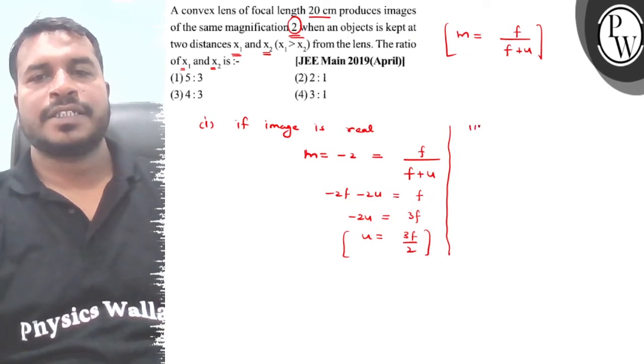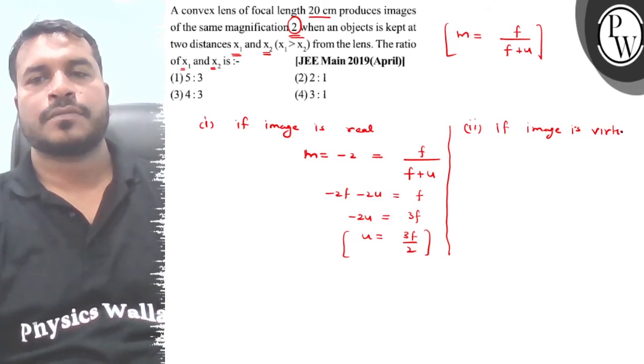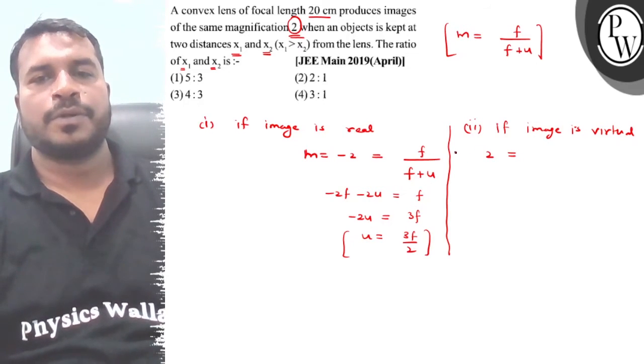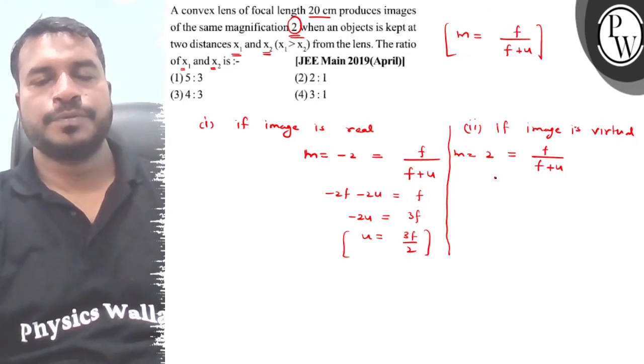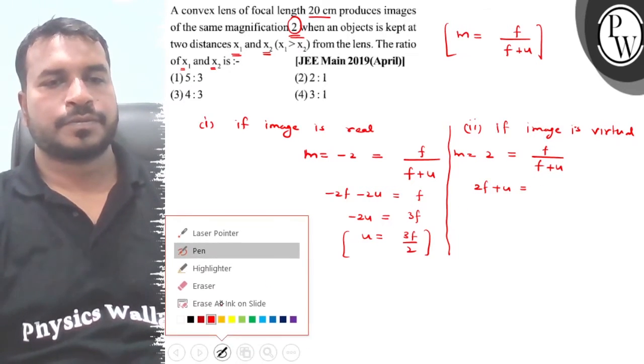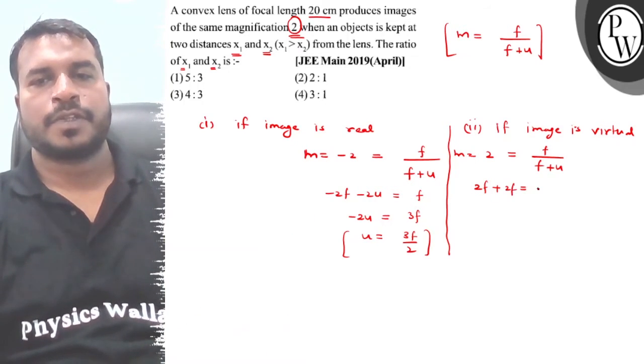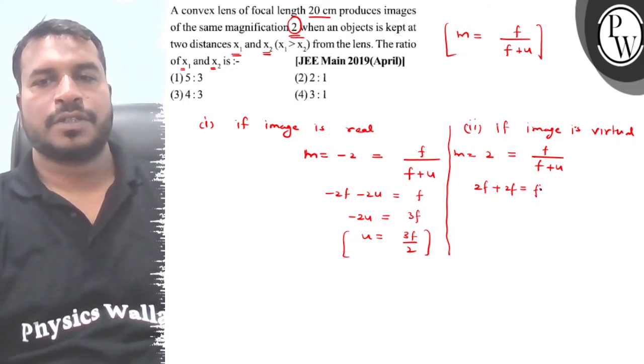The first thing we have to call about here, M is equal to plus 2, so f upon f plus u, so here we put 2f plus u equal to, sorry, 2f plus 2u equal to f, sorry, f.